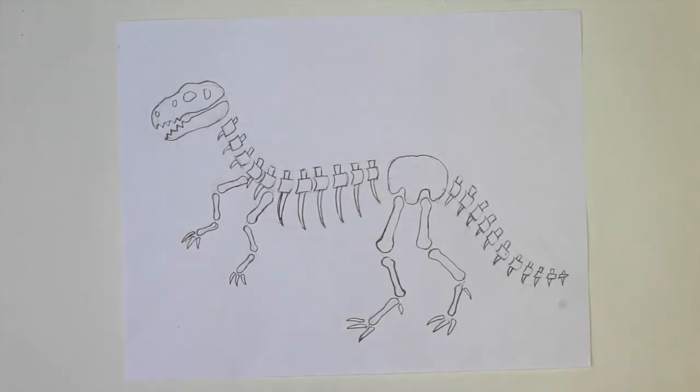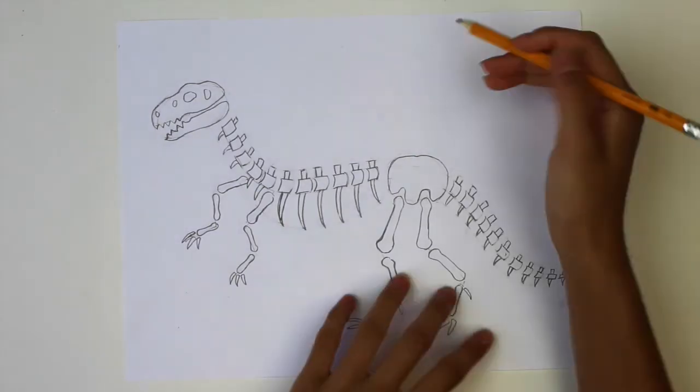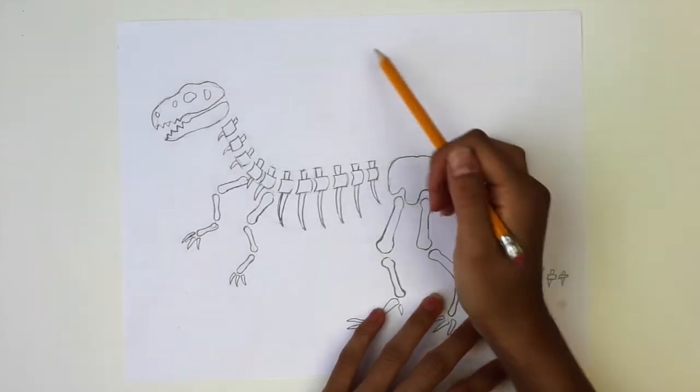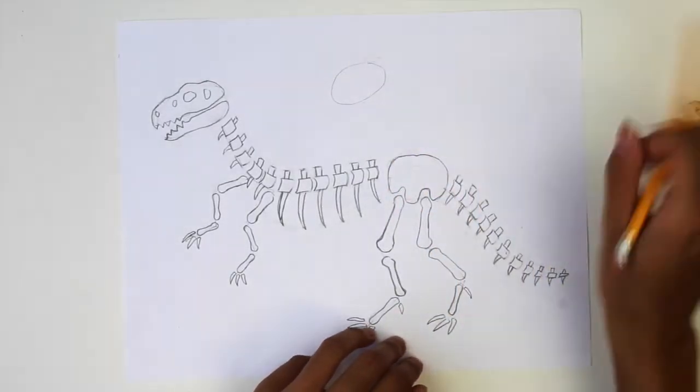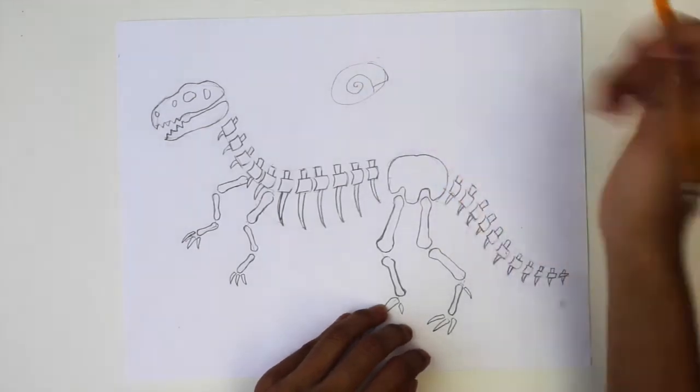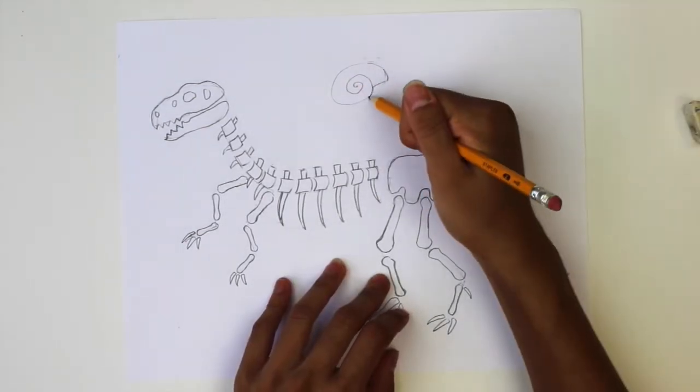Now we're going to fill the background with some plants and fossils. You can draw any that you like, but I will show you how to draw an ammonite and a horseshoe crab to start. For the ammonite, draw an oval and fill the oval with a swirl that cuts off at the edge. Draw a line for the opening and then draw lines rotating around the ammonite.